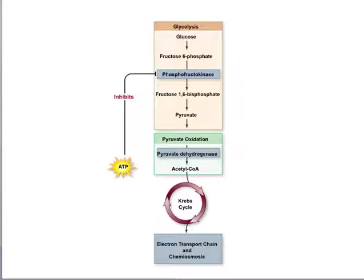Now let's look at the regulation of the process of cellular respiration. As with any process in the cell, it is closely regulated. If there is excess of ATP — meaning more ATP is being produced than what is being used — then there is no point of continuing glycolysis, and the ATP will inhibit glycolysis at the key point of the phosphorylation of fructose 6-phosphate, which is done by the enzyme phosphofructokinase. Excess ATP will inhibit this enzyme and prevent respiration from continuing when there is no need for more ATP production.